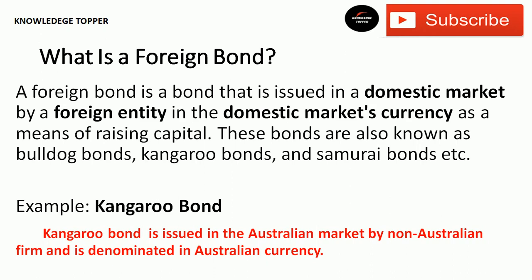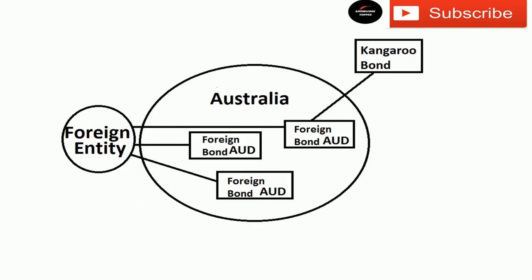Let's take an example of a kangaroo bond to understand foreign bonds. Suppose there is a country named Australia and a foreign bond is issued in Australia by a foreign entity like the USA or another non-Australian entity. The currency in which the foreign bond is issued must be domestic — in our case, Australian dollars. So there must be a match between the country and currency in which the bond is issued, but the bond must be issued by a foreign entity, not a domestic one. These types of bonds are called foreign bonds.